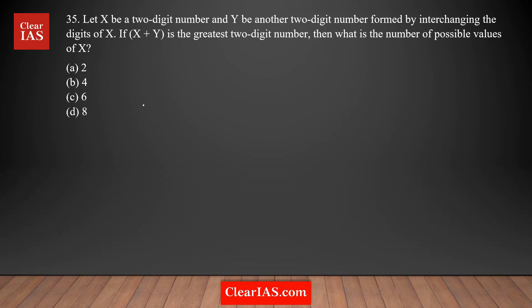Let's analyze question number 35. Let x be a two-digit number and y be another two-digit number formed by interchanging the digits of x — that means reversing the digits of x to get y. And x plus y is the greatest two-digit number, which is 99. So we know the sum of these two numbers is equal to 99. The question is asking: what is the number of possible values of x?